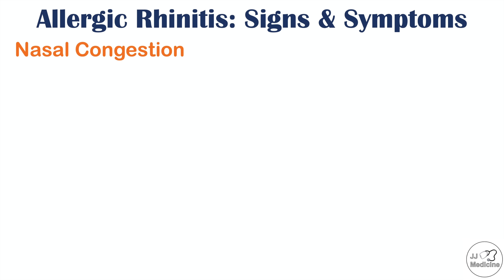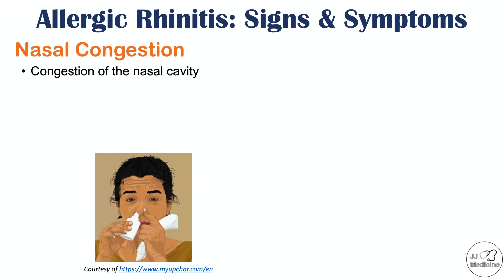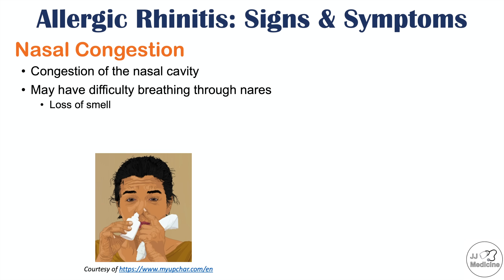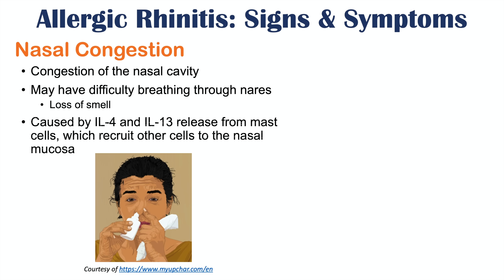Another symptom is nasal congestion — congestion of the nasal cavity — which may cause difficulty breathing through the nostrils. In some cases the congestion can be so bad that there is some loss of smell or difficulty smelling, which can also be due to excessive mucus production. This nasal congestion is caused by interleukin-4 and interleukin-13 released from mast cells, which recruit cells to the nasal mucosa, leading to more edema and congestion.